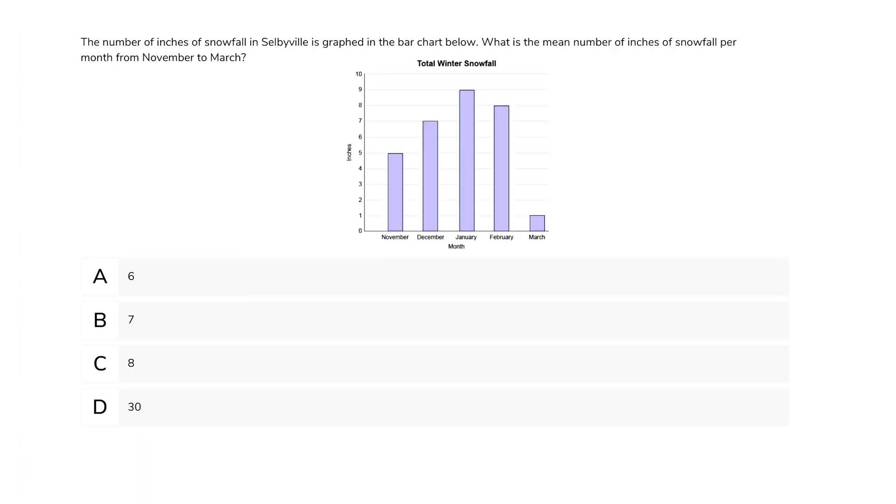One category down, two to go. Moving on to data and stats, let's look at a question from that data interpretation section. The number of inches of snowfall in Selbyville is graphed in the bar chart below. What is the mean number of inches of snowfall per month from November to March? To find the mean, we need to add up all values and divide them by the number of values in the data set.